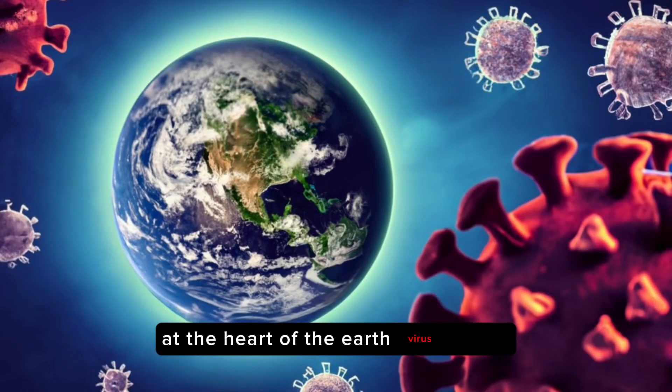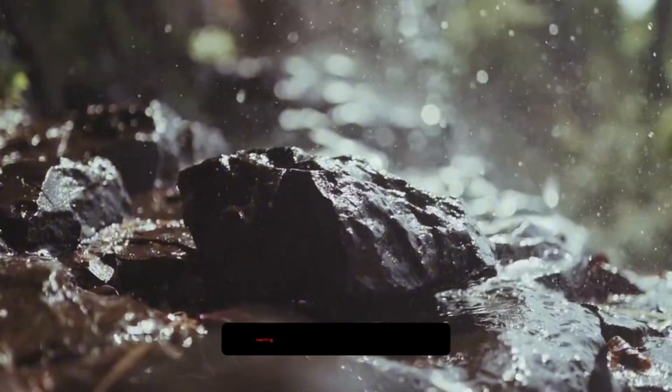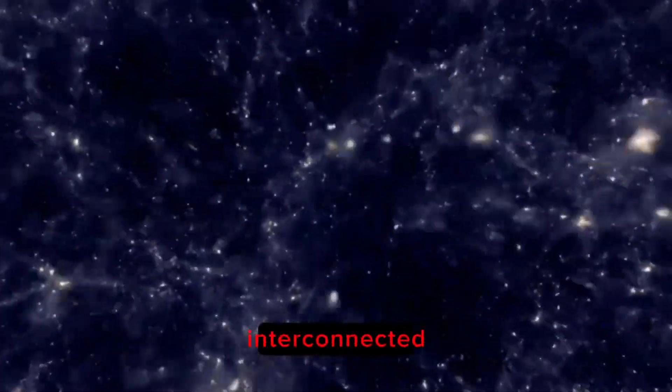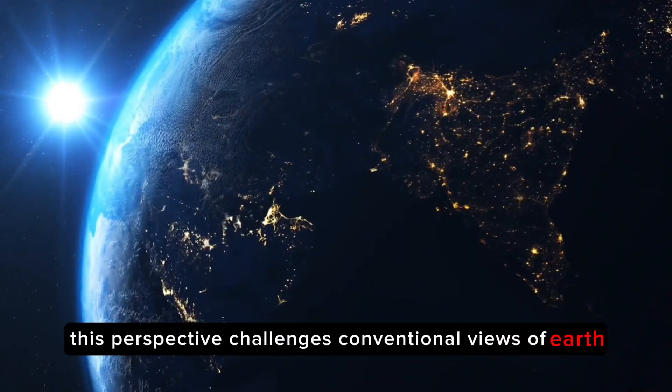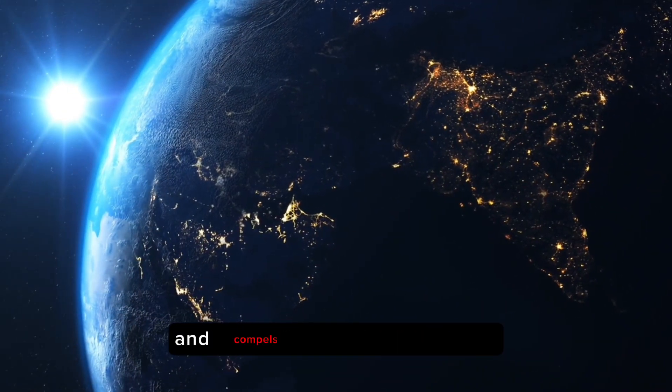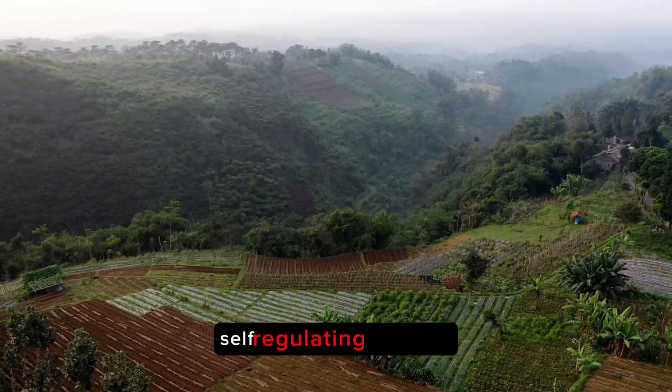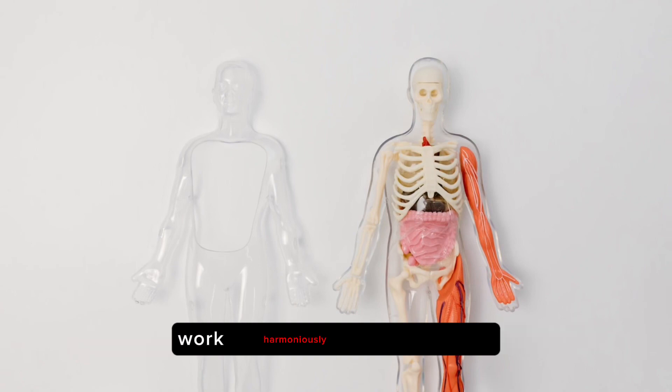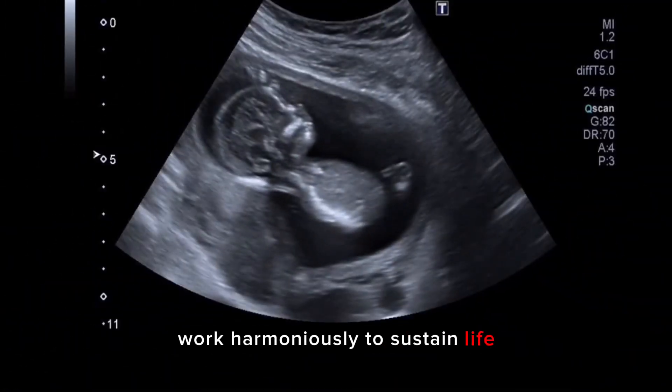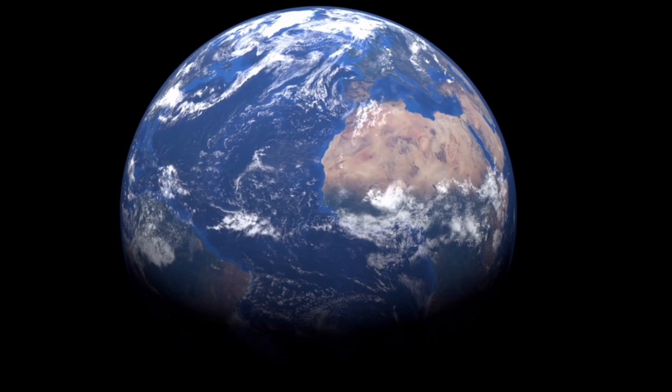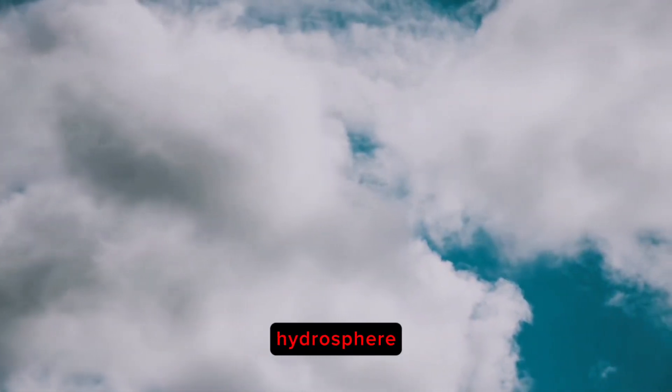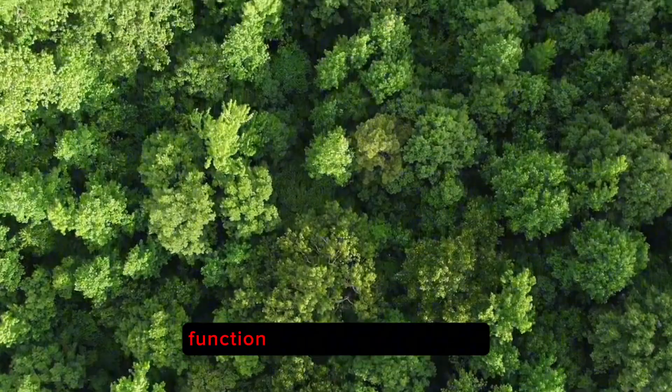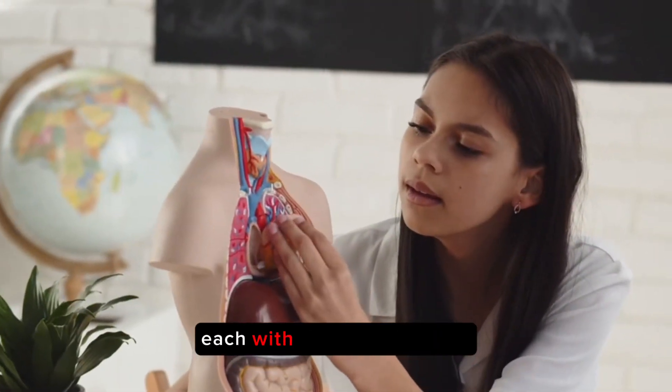At the heart of the Earth virus theory lies the captivating notion that our planet is not just a lifeless rock hurtling through space, but a dynamic, interconnected and living entity. This perspective challenges conventional views of Earth as an inanimate object and compels us to see it as a vast, self-regulating organism. Much like the complex systems within the human body work harmoniously to sustain life, Earth's myriad interconnected systems - its atmosphere, hydrosphere, lithosphere and biosphere - function as the planet's organs, each with a vital role to play.